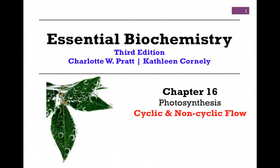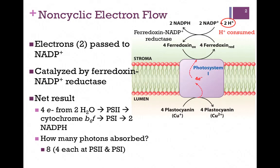In our next lesson on Chapter 16, Photosynthesis, we want to compare cyclic and non-cyclic flow. Recall from our last lesson that we initiated the system by photooxidation events at Photosystem 2 and eventually passed them to Photosystem 1.